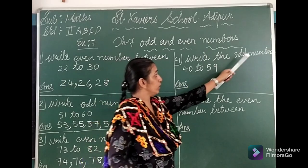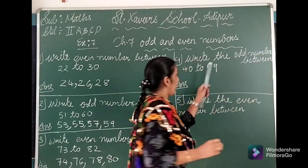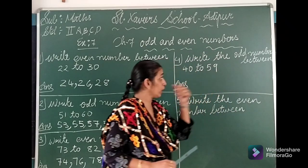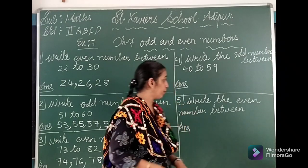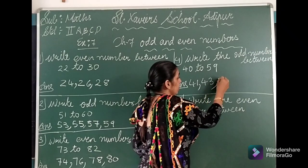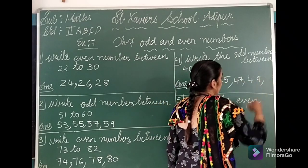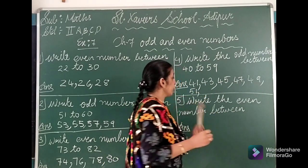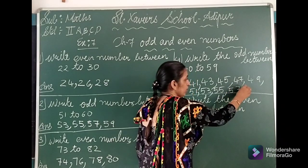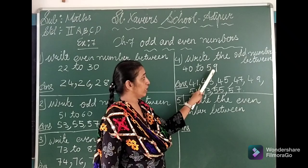Moving towards question number 4: write the odd numbers between 42 to 59. So 42 to 59. 42 is even — we will not write it. We write 43. 44 is even. 45 — we write. 46 is even. 47 — we write. 48 is even. 49 — we write. 50 is even. 51 — we write. 52 is even. 53 — we write. 54 is even. 55 — we write. 56 is even. 57 — we write. 59 is odd but it is the boundary, so we stop before it.